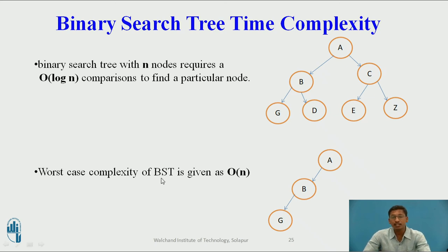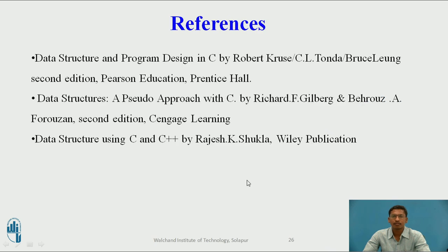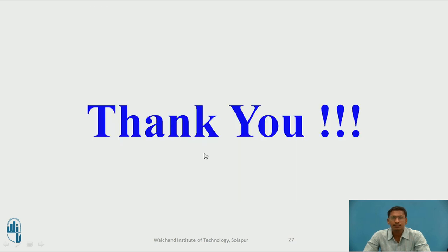The worst case time complexity of a binary search tree is O(n). This occurs when the tree is a skew tree, where all nodes are on one side. In that case, the maximum number of comparisons equals the number of nodes, giving O(n) complexity. These are the references used for this video. Thank you.